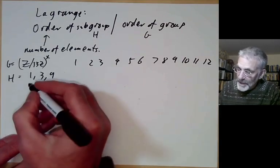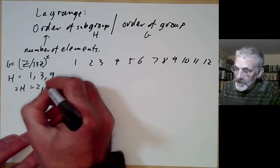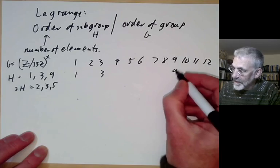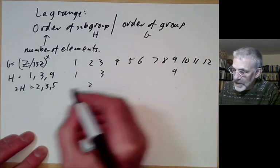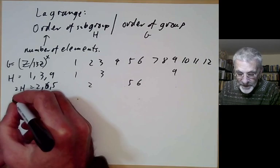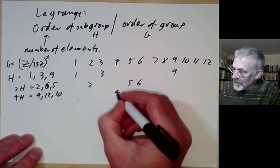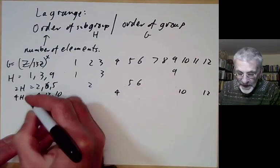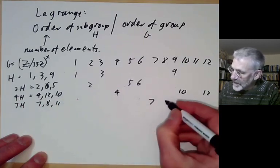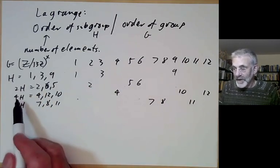So here's H, consisting of 1, 3, and 9. Here's 2H, consisting of 2, 6, and 5. We could also look at 4H, which is 4, 12, and 10. And then 7H, which is 7, 8, and 11. If you look, every element of G is in exactly one of these four cosets of H. This is what happens in general. A coset of H is denoted by aH — the set of all elements a times h1, ah2, and so on.